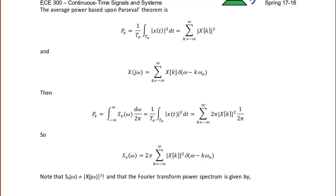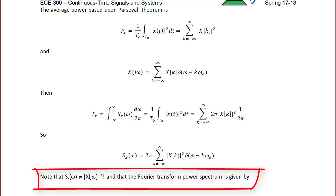We set that equal to Parseval's theorem: one over T₀ times the integral over one period of |x(t)|² dt, which equals the summation from k = −∞ to ∞ of 2π |x[k]|² times 1 over 2π. We've added 2π and divided by 2π to match the integral form. Solving for S_x(ω), it equals 2π times the summation from k = −∞ to ∞ of |x[k]|² δ(ω − kω₀). It is important to emphasize that S_x(ω) is not equal to |X(jω)|² because there is no definition for squaring an impulse.